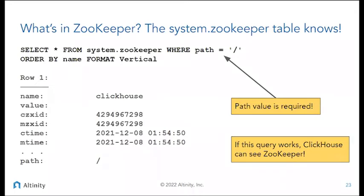This allows you to do a couple of things. One is it allows you to see what's in the tree. You use this with 'where path equals' and you give the path — ClickHouse won't guess it for you. The other thing it does is if this query works, it means ClickHouse can see ZooKeeper and ZooKeeper is working.